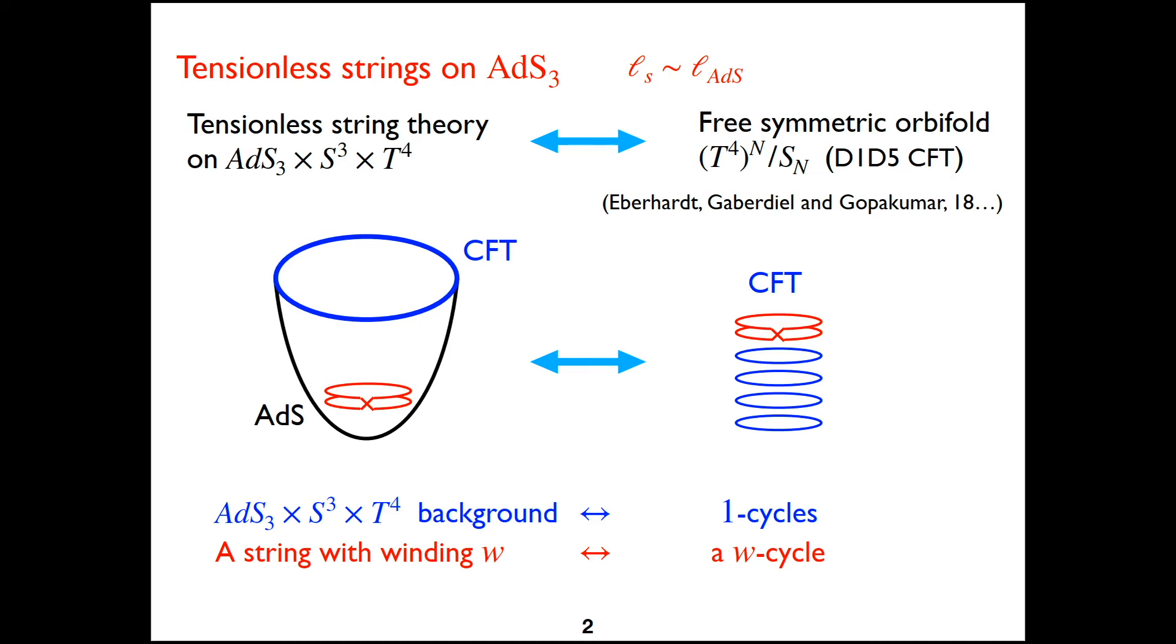And there are also multi-1 cycles to represent the twisted sectors. This duality works as follows: The AdS background corresponds to all cycles in the CFT being one cycles and the string with winding number W in the bulk corresponds to a W cycle in the boundary CFT.